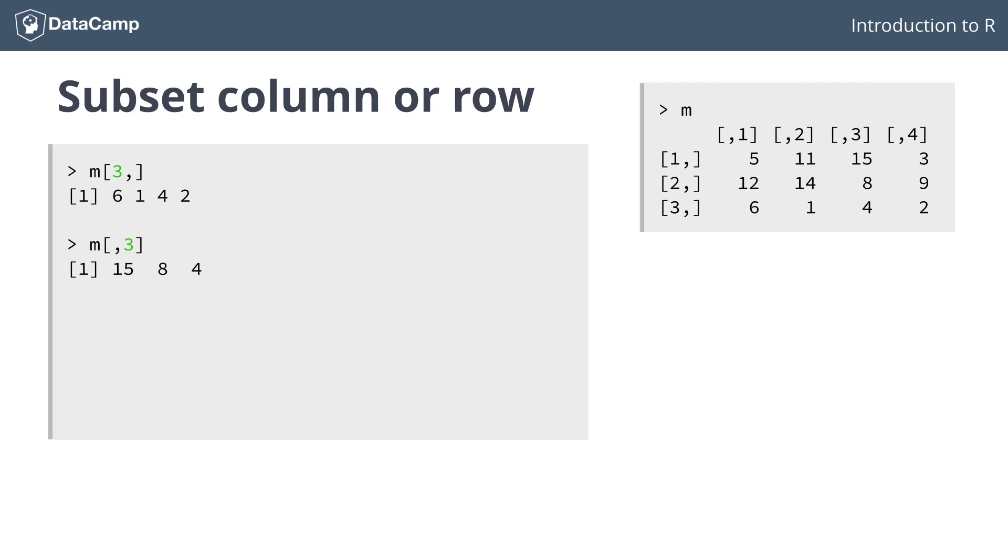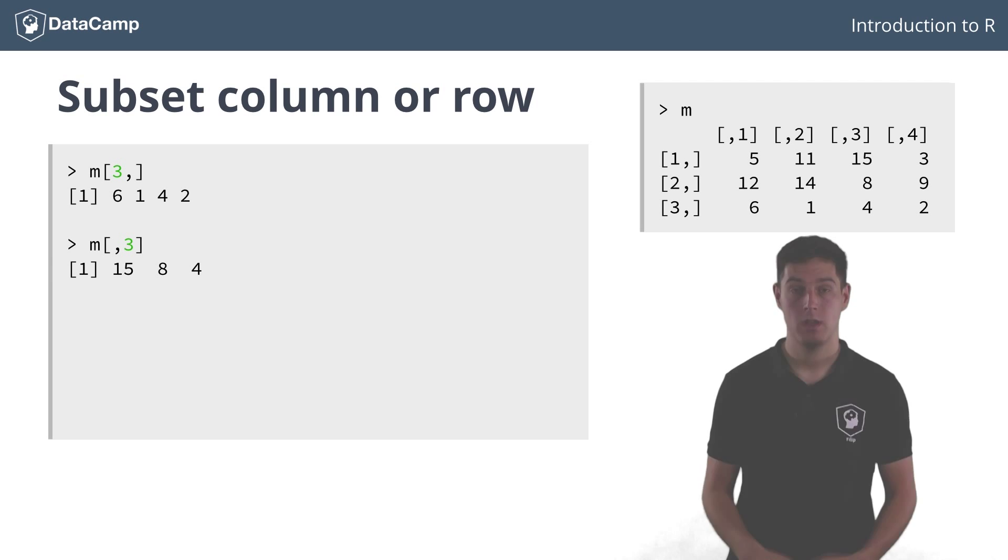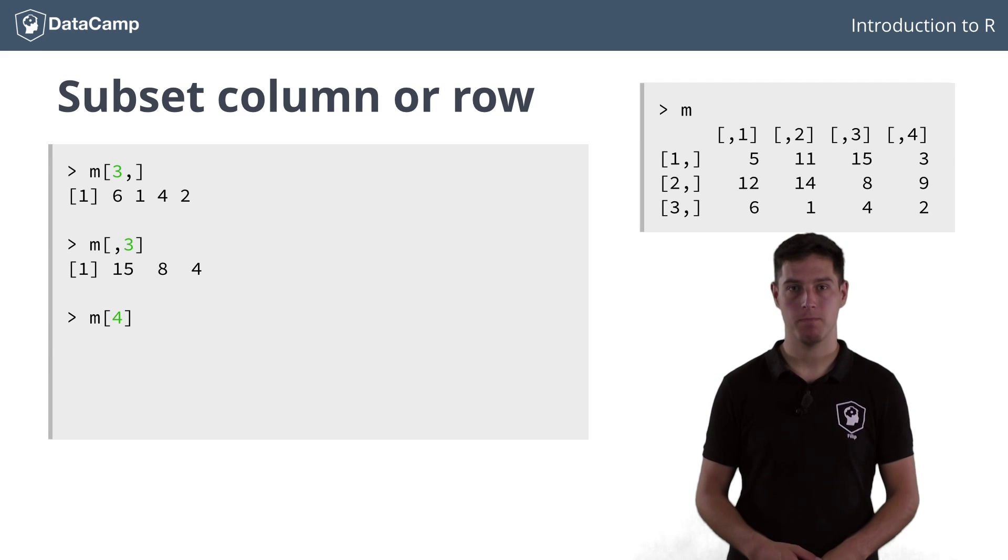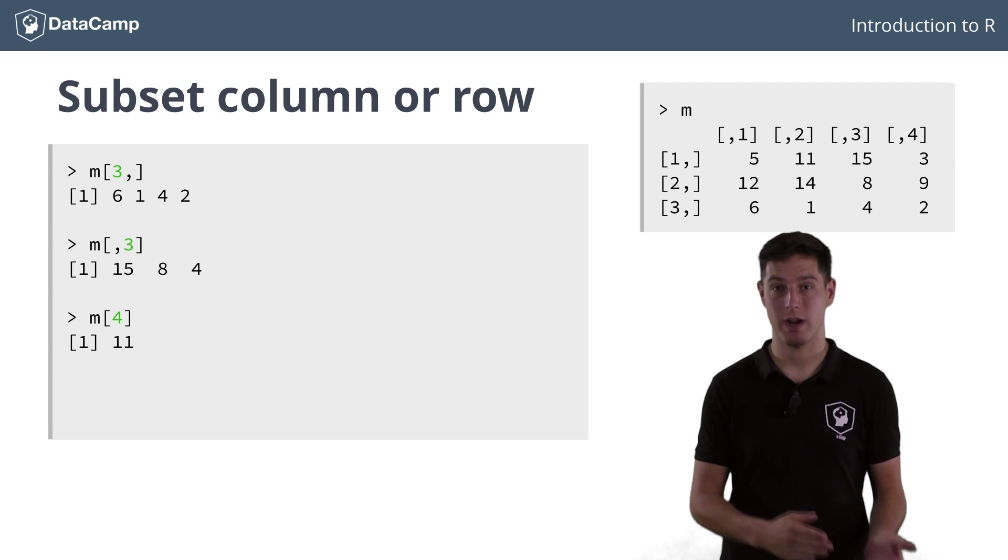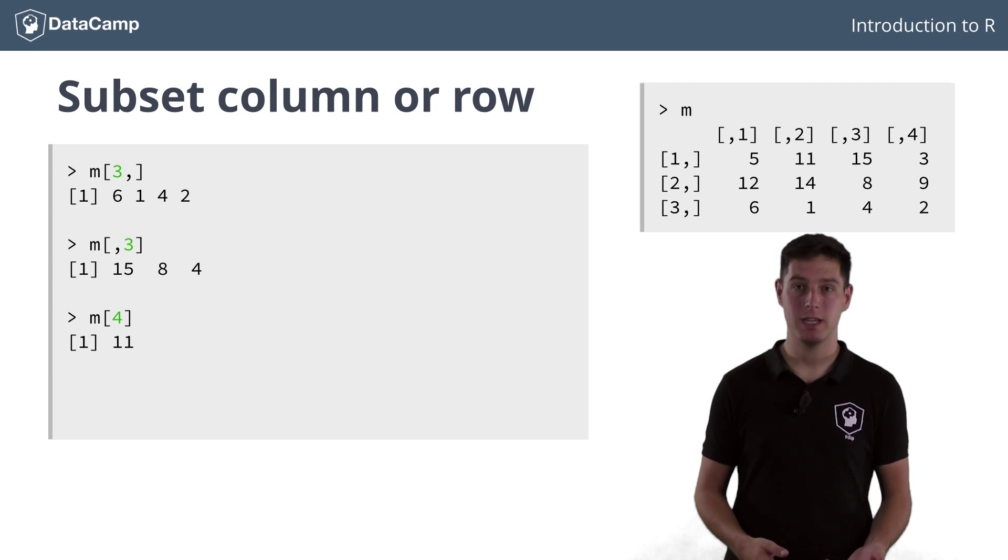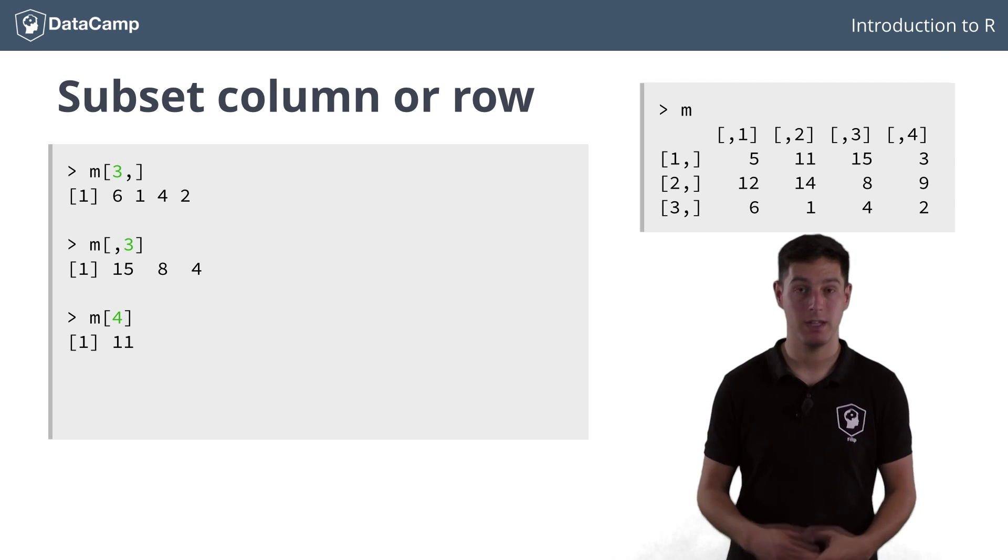Now, what happens when you decide not to include a comma to clearly discern between column and row indices? Let's simply try it out and see if we can explain it. Suppose you simply type m and then 4 inside square brackets. Result is 11. How did R get to that? Well, when you pass a single index to subset a matrix, R simply goes through the matrix column by column from left to right. The first index is then 5, the second one 12, the third one 6, and the fourth one is 11, in the next column.